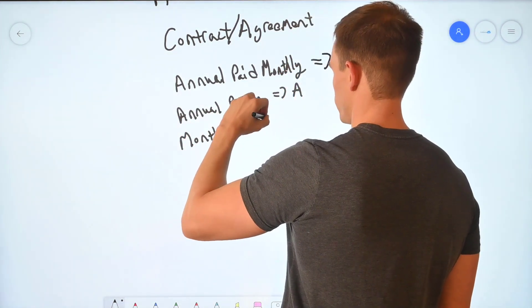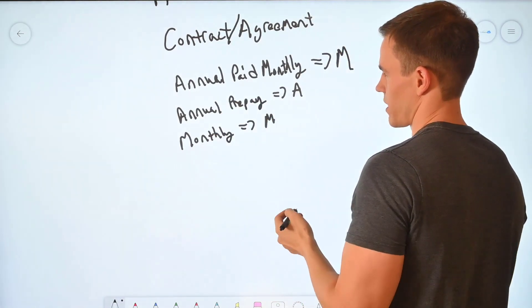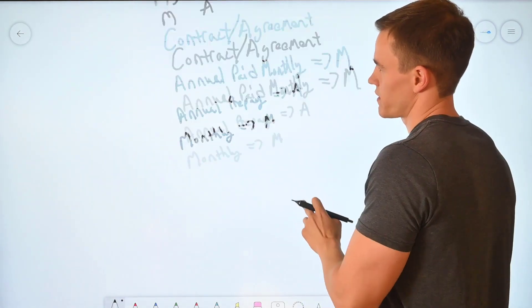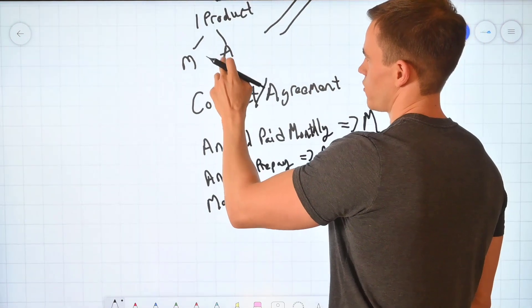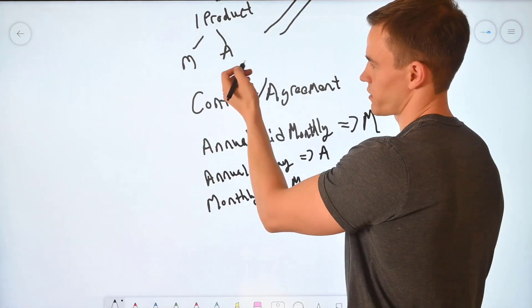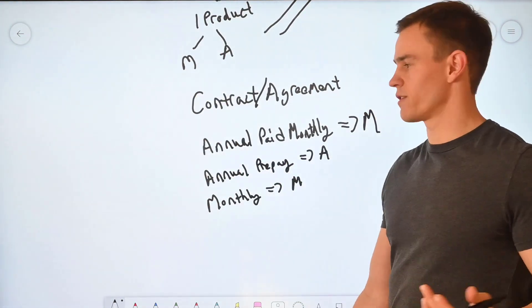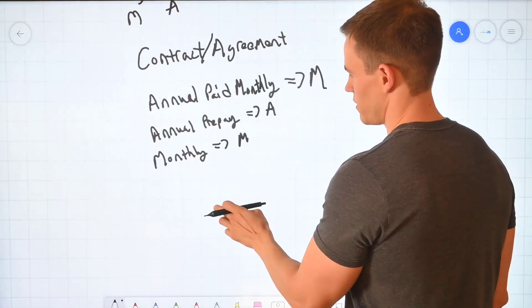Now again, we can run into the scenario of a single product being purchased with multiple subscriptions with multiple different commitment terms. And so in your PSA tool, you could still have this concept of syncing over or having the annual paid monthly and monthly on the same contract or agreement.